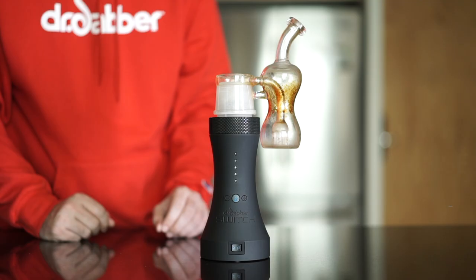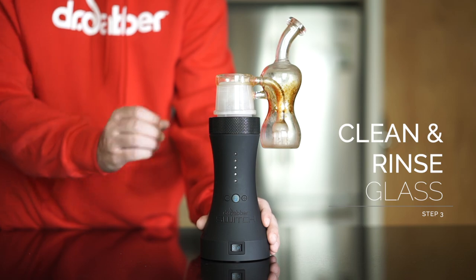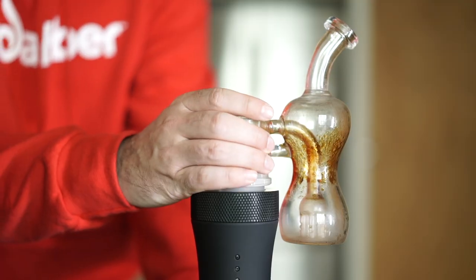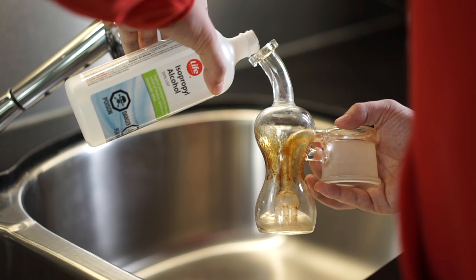Lastly, to clean your glass water attachment, carefully remove the glass attachment from the base by holding onto the base with one hand and pulling upwards from the glass joint with your other hand. Pour your isopropyl alcohol into the glass attachment and shake vigorously.